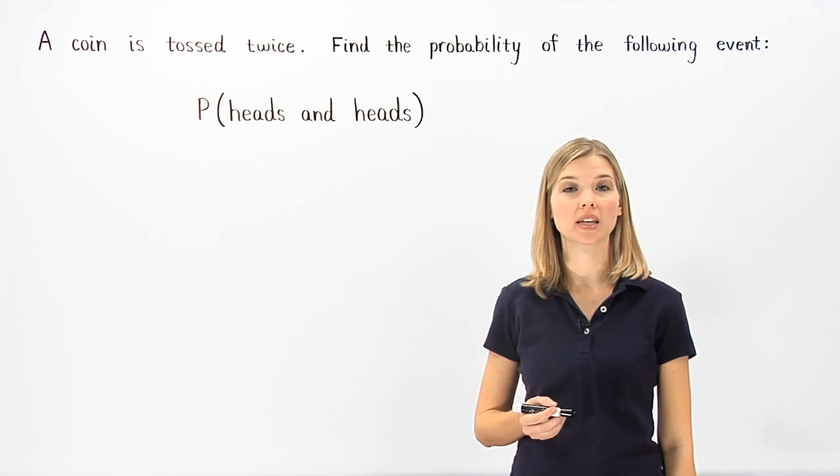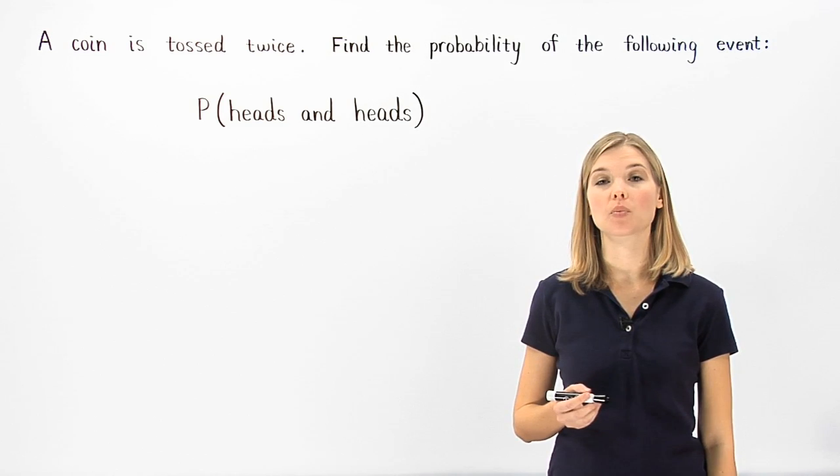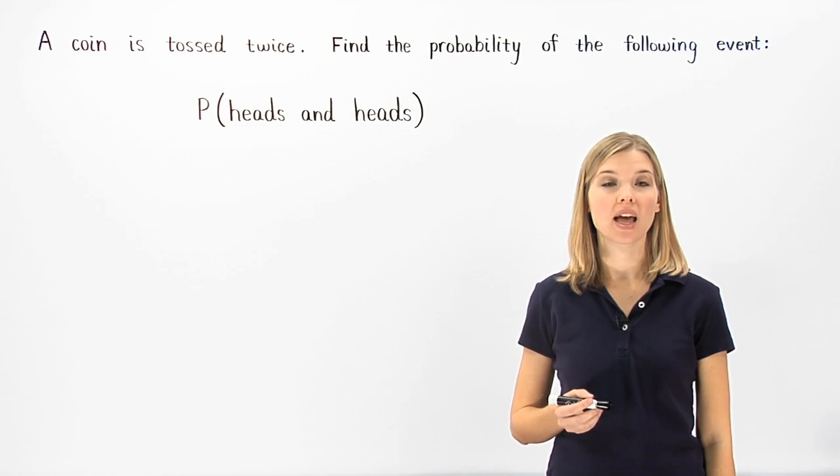To find the probability of independent events, we first find the probability of each event, then we multiply the probabilities together.